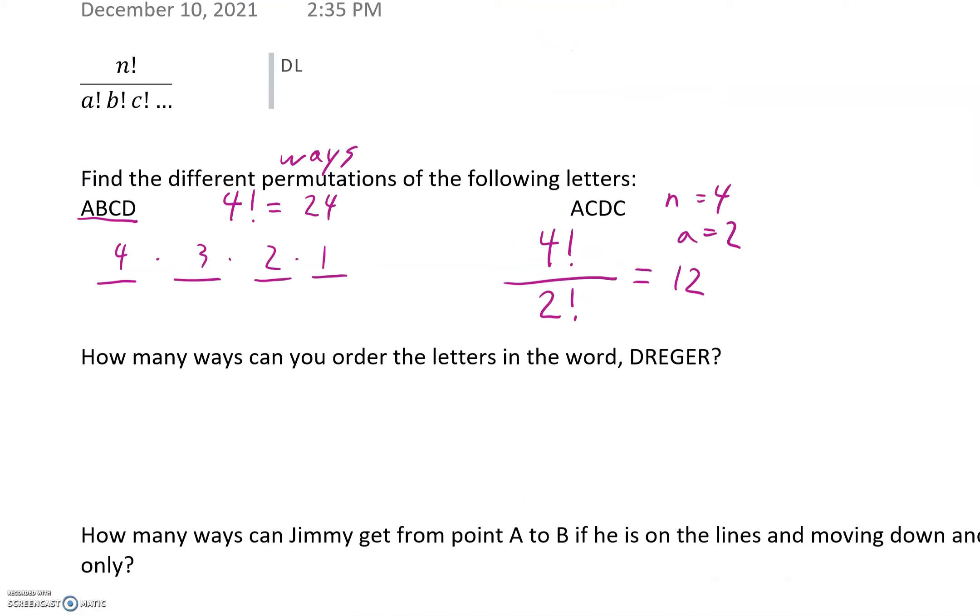Alright, so let's try this out. So N factorial. There are 1, 2, 3, 4, 5, 6 letters in the name Drager. So 6 factorial. And then how many are repeated? Well, the R's are repeated and there's two of those, and the E's are repeated and there are two of those. So this is our equation here.